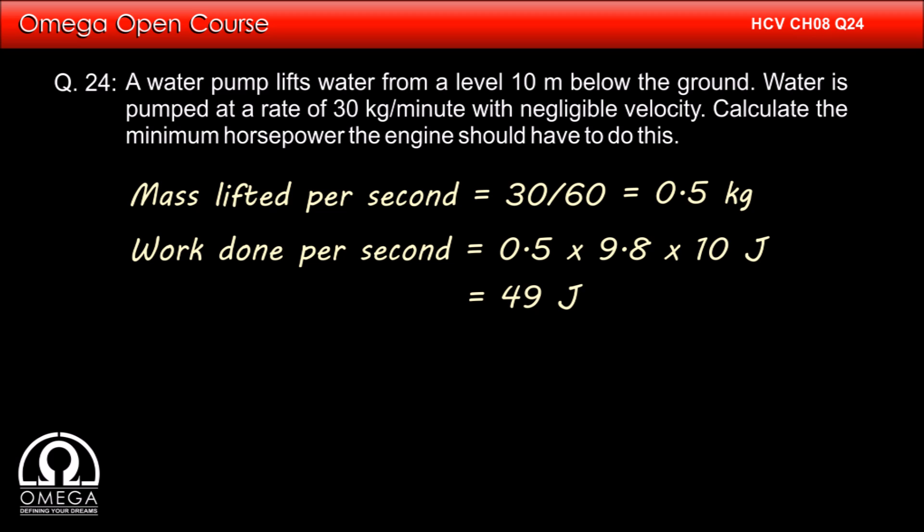So the required power is 49 joules per second or 49 watts. We know that 1 horsepower is equal to 746 watts. Therefore the required power in horsepower unit is 49 by 746, which is 6.6 into 10 to the power minus 2 horsepower. This is our answer.